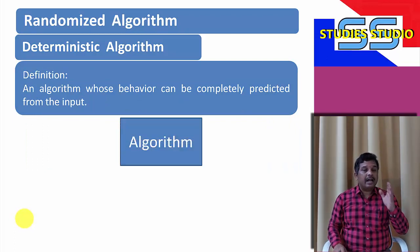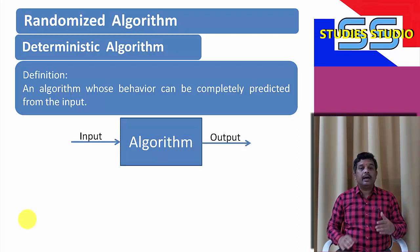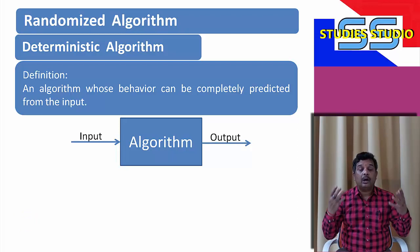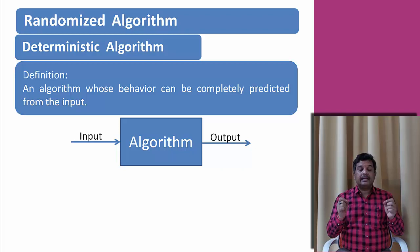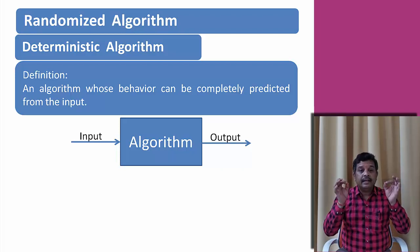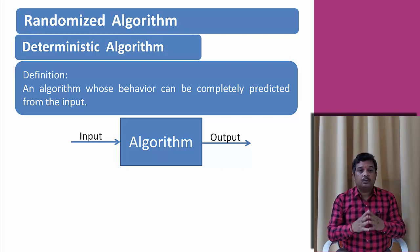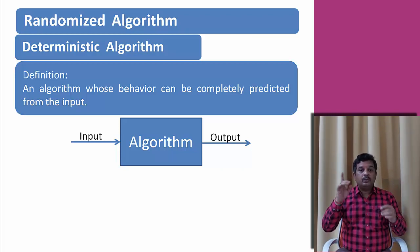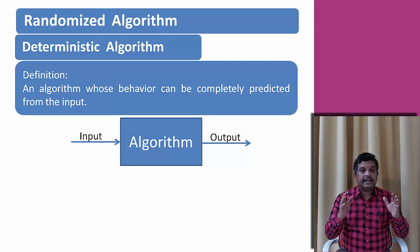To understand that, let us say we have an algorithm. We give some input and get some output, and we can exactly say what kind of output we will get with a given input. A deterministic algorithm, given a particular input, always produces the same output, and the underlying machine always passes through the same sequence of states.